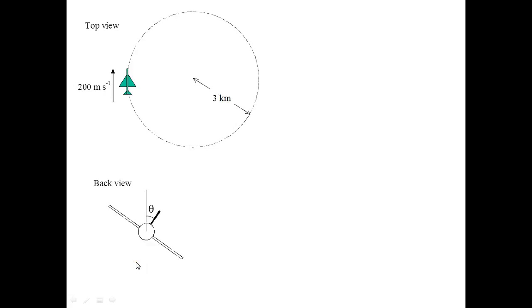In part A, you are asked to find angle theta, which is the banking angle. The angle between the vertical line of the earth axis, as well as the vertical axis of the plane.